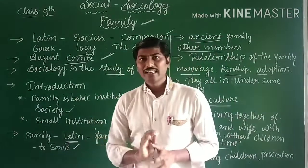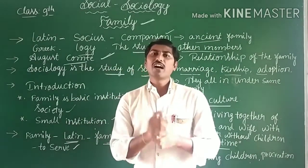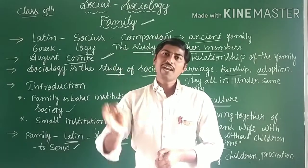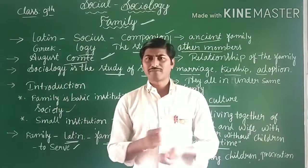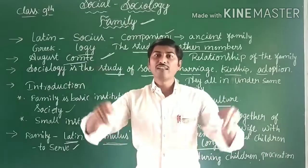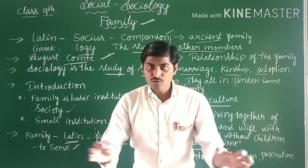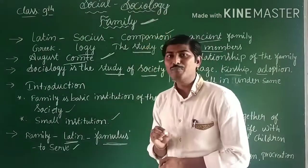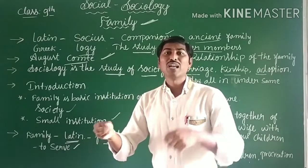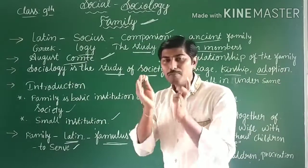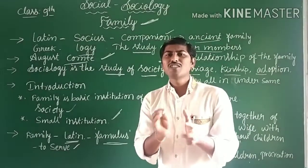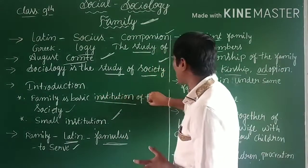In sociology, our first chapter is Family. In this chapter you are going to learn about the meaning of family, the characteristics of the family, and the types of family. The man is a social being living in society. Man creates various social institutions to fulfill his basic needs. Among these social institutions, the family is the most important. There are many social institutions — school, temple, office — but the family is the main social institution, and it is the small and basic institution of society.